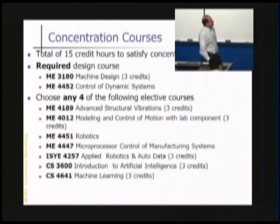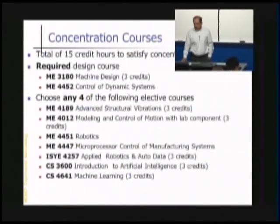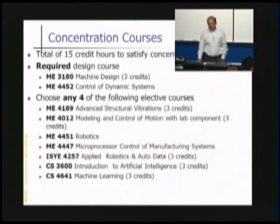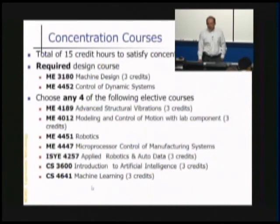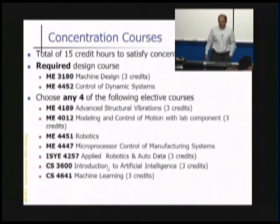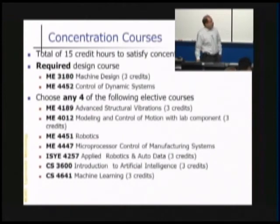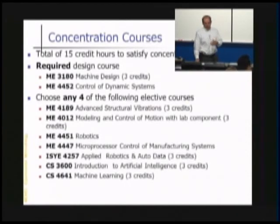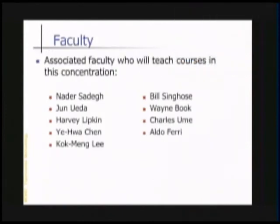The first elective is advanced structural vibrations, which is currently an elective course as well. Second, ME 4012, is an existing course on modeling and control of motion with a lab component. There is also a robotics course which I'm teaching this semester, undergraduate robotics, microprocessor control of manufacturing systems, and several courses from other schools like an ISYE course on robotics and a couple of college of computing courses. These are the courses you need to take to get your certificate in this concentration area.